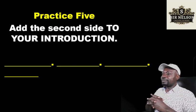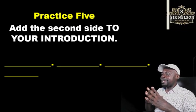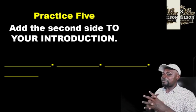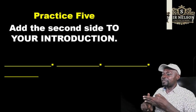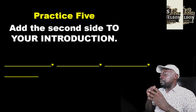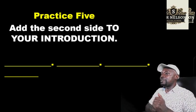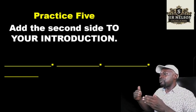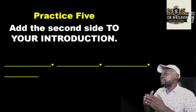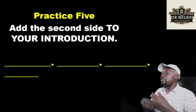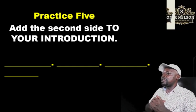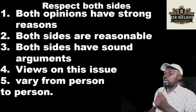Practice five: add the second side to your introduction. Now our introduction has four parts: the general statement, the first side, the contrasting phrase, and the second side. Remember, the second side is about the disadvantages — but before you mention the disadvantages, remember to put a linking phrase like 'Others say that.' Don't use common verbs like 'say' and common words like 'disadvantages' or 'advantages' — use synonyms in your introduction.